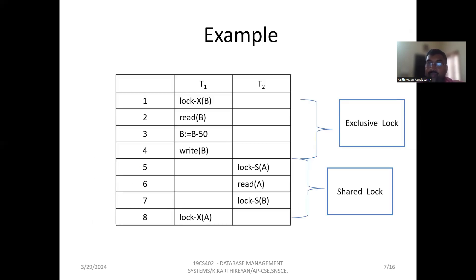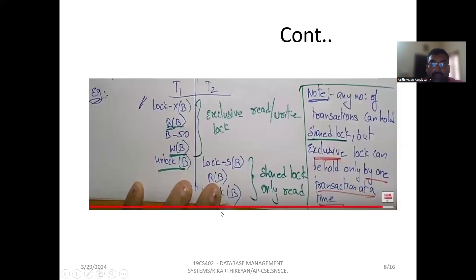This is one example: we have transactions T1 and T2. Lock-X(B), Lock-X(B), read operation, then write operation - both processes called exclusive lock. Suppose Lock-A, read, and Lock-S(B) - this is only read operation. Here both read and write operations, this is called exclusive lock. Only read operations are available, that is called shared operation.